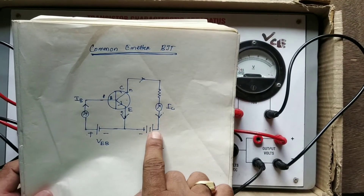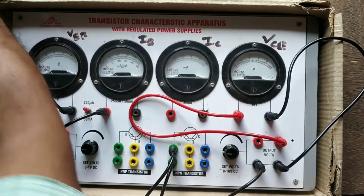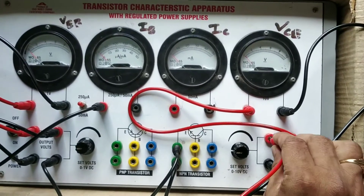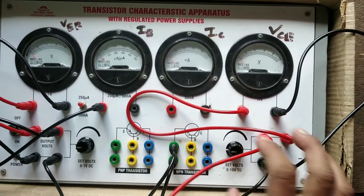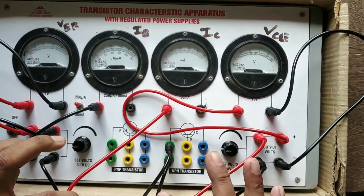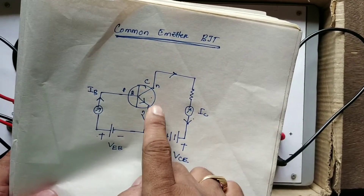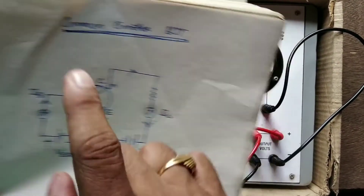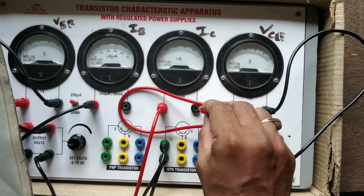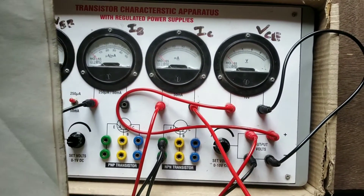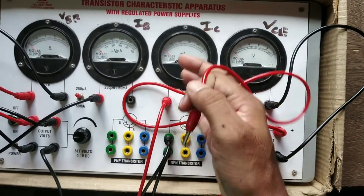Then BCE positive is connected to IC — BCE positive means this red terminal connected to IC. Then IC is connected to the collector. This is your collector.